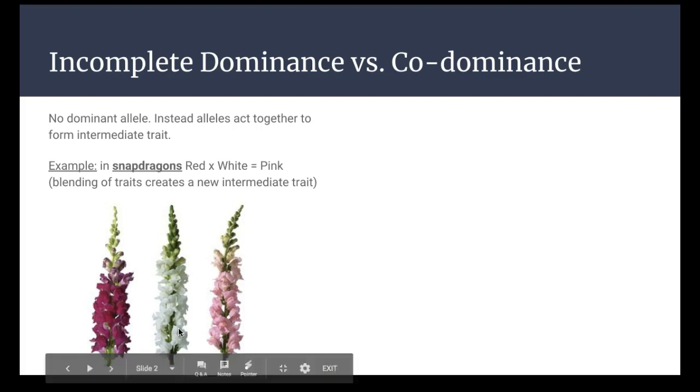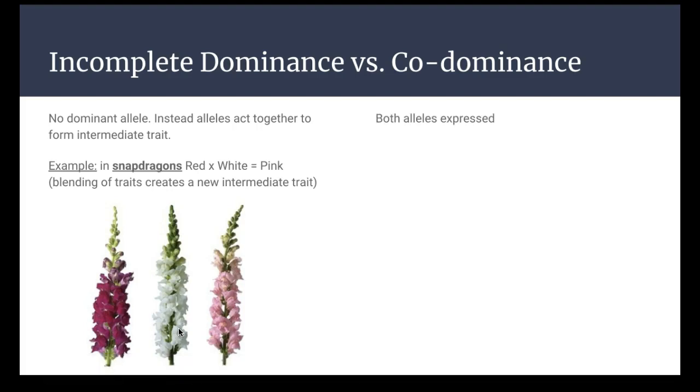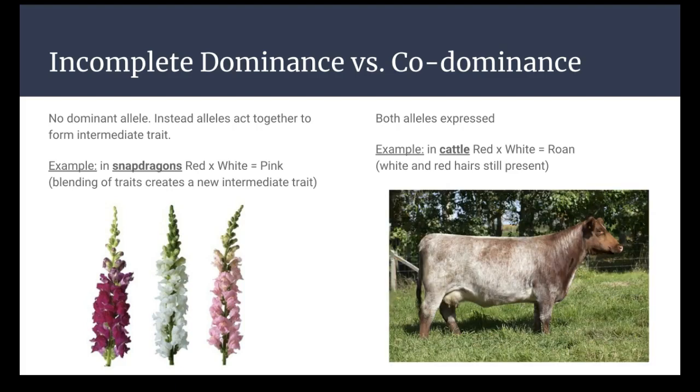On the other side, co-dominance. Both of the alleles are still expressed, so kind of like a dalmatian or something along those lines that has spots would be an example of co-dominance. The example that we're going to be using is in cattle, where it takes a red bull and a white cow or vice versa and creates a roan cow. There's white hairs and red hair still present on the cow, but from far away it looks like a little bit of a different color.